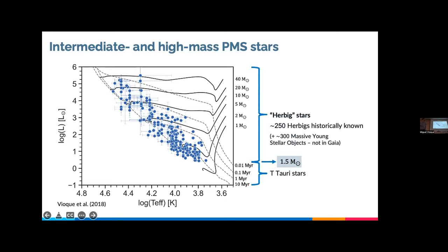Herbig stars are interesting for many reasons, mainly because they have a high impact on the interstellar medium and nearby star-forming regions. But they're also interesting because we don't know that much about them. One reason is that we don't know that many Herbig stars — you might think 250 is a large number, but in contrast we know thousands of T Tauri stars, which are on average a thousand times closer.